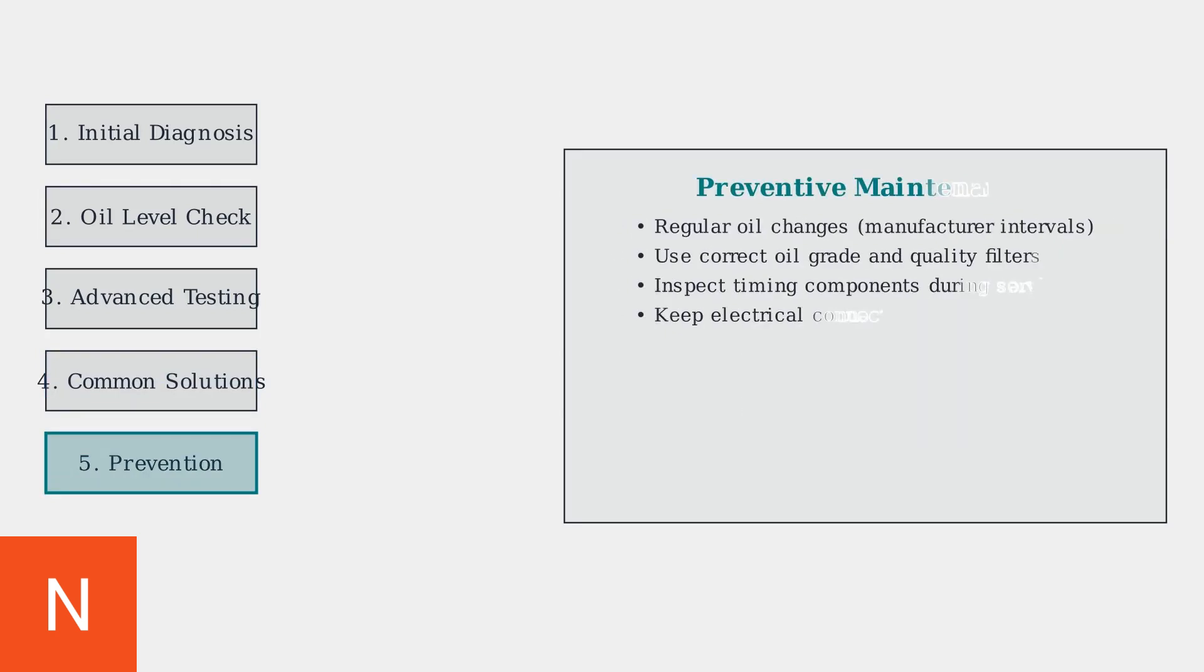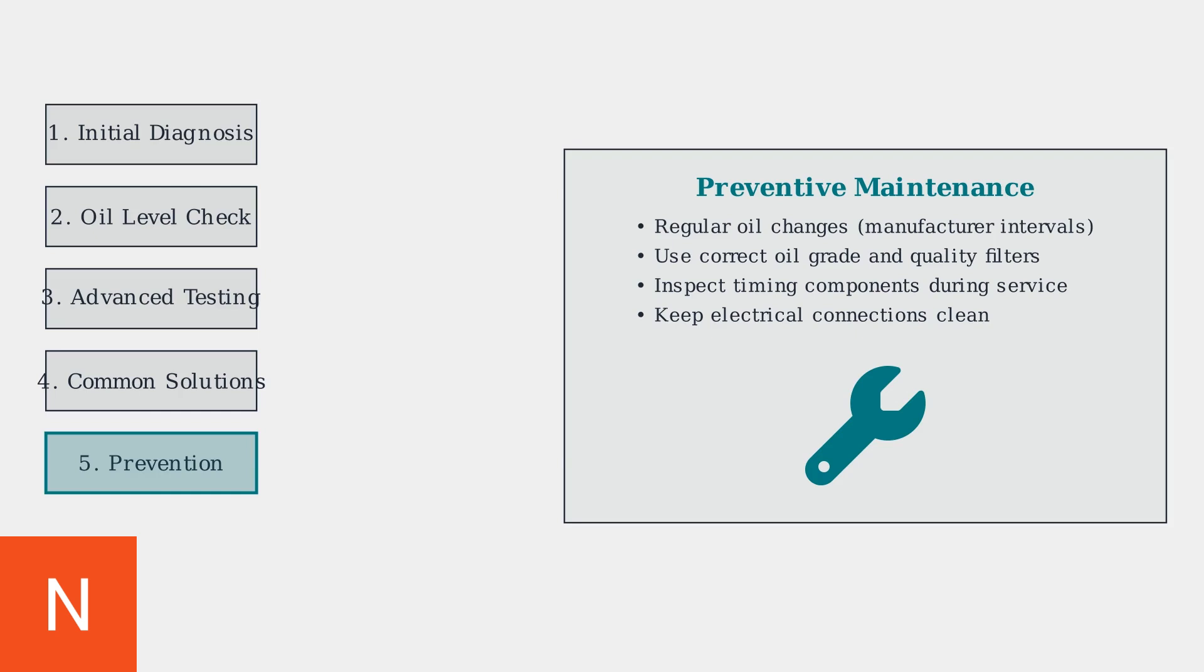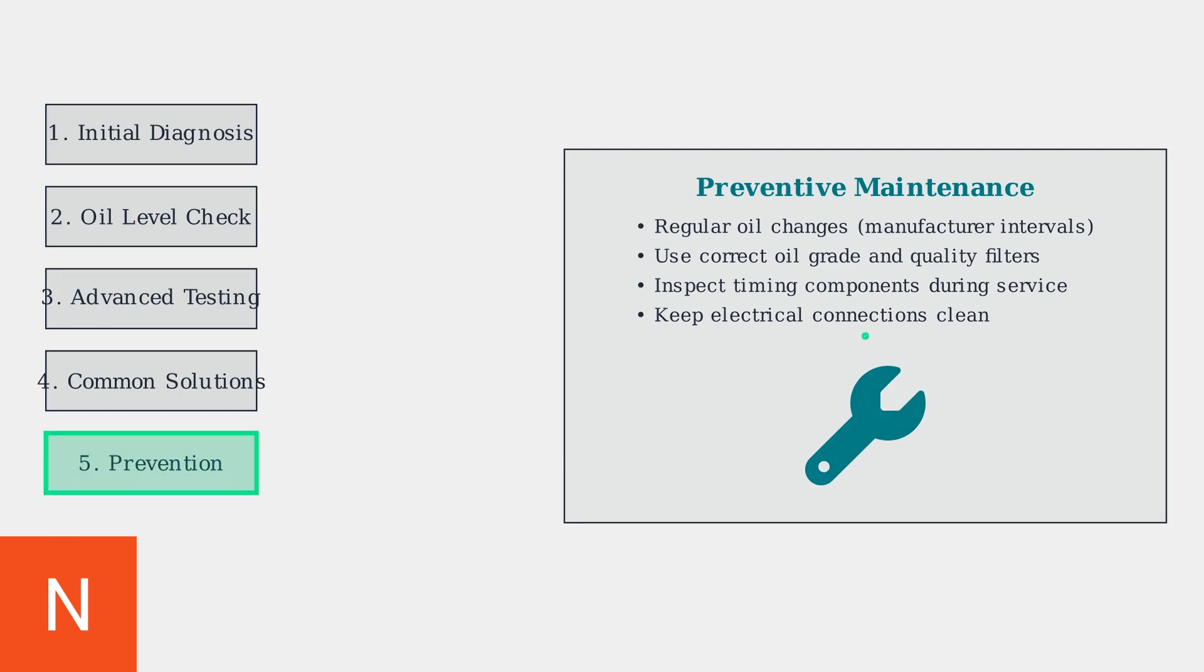Step five focuses on prevention. Regular oil changes with the correct grade and quality filters are essential for VVT system health and preventing future P000B codes. Following this systematic diagnostic approach will help you accurately identify and resolve P000B codes. Remember to always verify your repair with a test drive and monitor the system for proper operation.